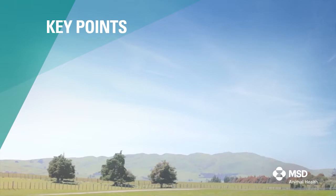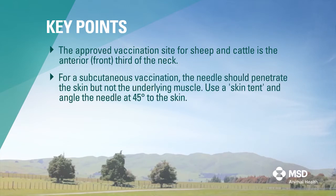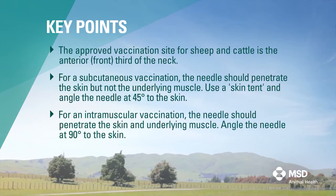The key points to remember are: the approved vaccination site for sheep and cattle is the anterior third of the neck. For a subcutaneous vaccination, the needle should penetrate the skin but not the underlying muscle — use a skin tent and angle the needle at 45 degrees. For an intramuscular vaccination, the needle should penetrate the skin and underlying muscle; angle the needle at 90 degrees to the skin.